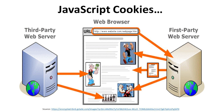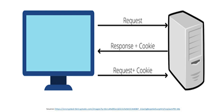This diagram elaborates the functioning of first-party and third-party web servers in contact with the web browser. The user requests from the server, gets a response with the addition of a cookie, and then this assigned cookie is used with the next request from the user to the database or server.